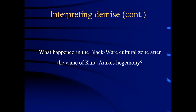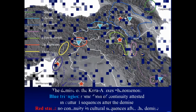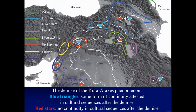So what happened in the Black Ware Cultural Zone after the wane of the Kura-Araxes hegemony? I think we may gather a few answers by looking at the aftermath of the demise. I have been trying to do this by mapping the way highland communities developed or evolved in the second half of the third millennium — whether that development took the shape of some form of continuity in the cultural sequences or in the way settlements were abandoned, or if, on the contrary, settlements were abandoned and in what manner.